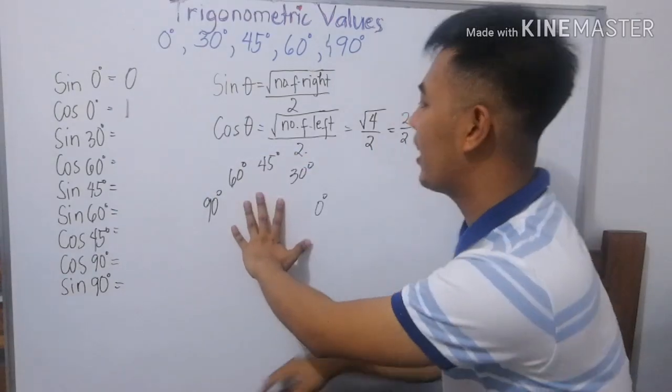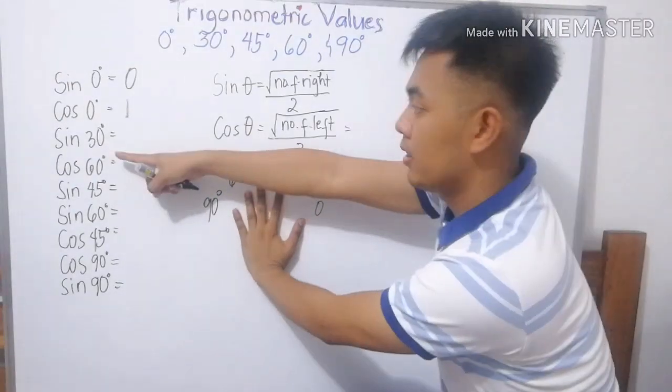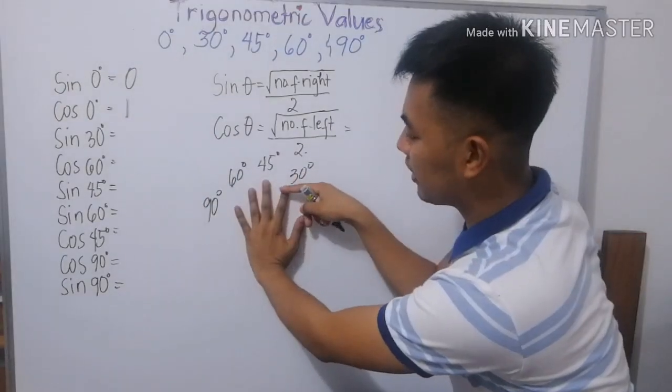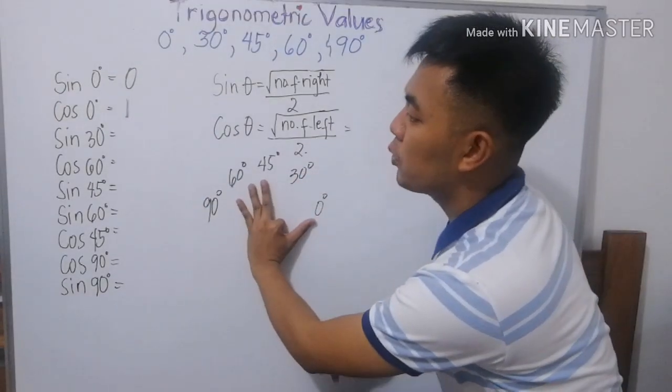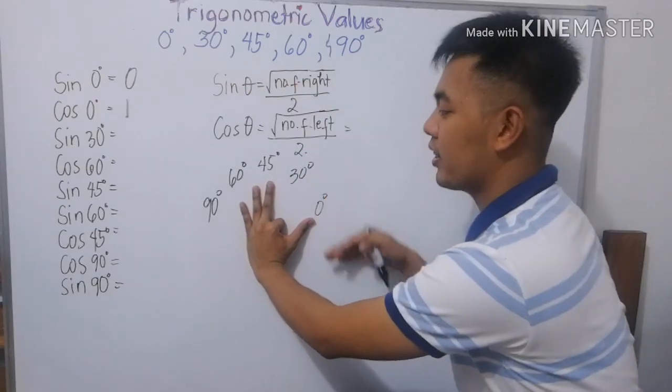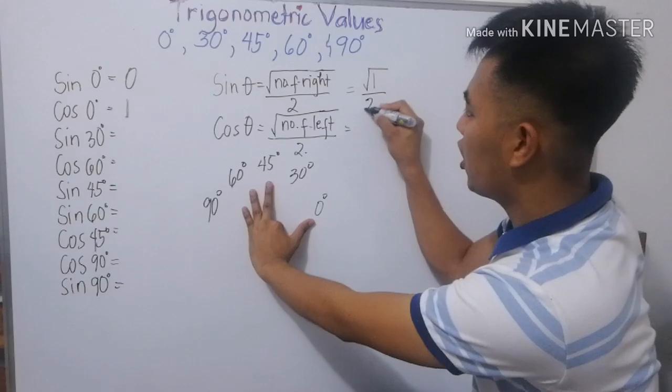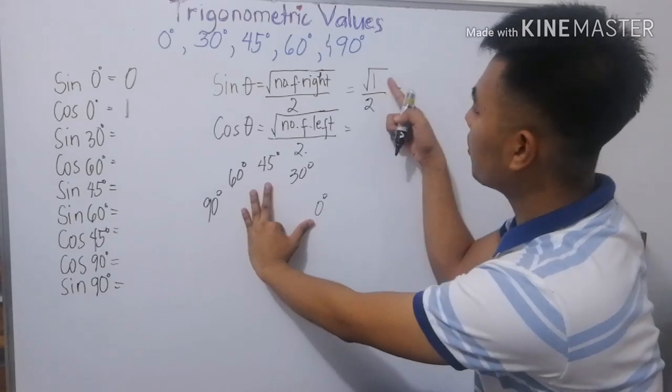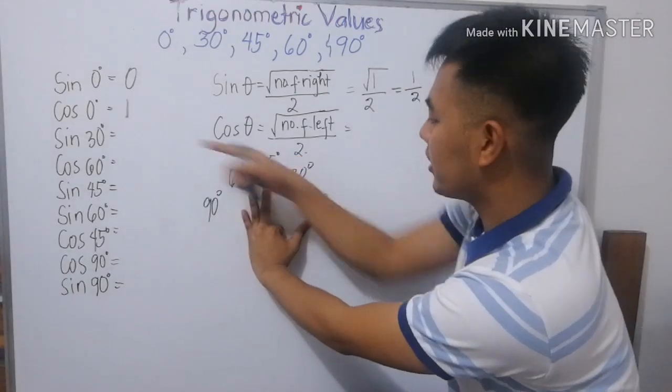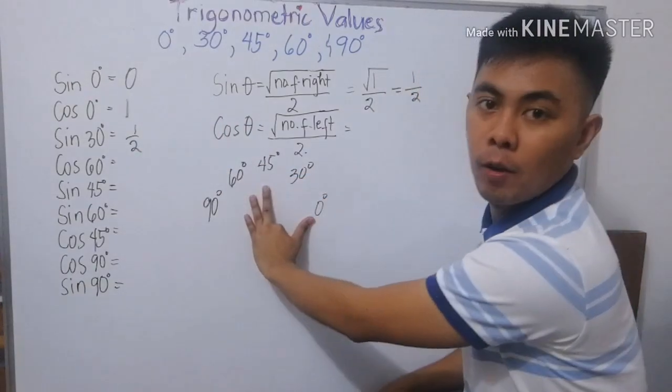Okay. So, yung mas malaking angle, tupiin natin. So, sine 30 degrees. 30 degrees ang ginamit ng angle. So, tupiin natin si 30. Number of fingers to the right. Ilan yung natin sa kanan? 1, square root of 1 over 2. So, yung square root of 1 is 1 over 2. Ibig sabihin, ang sine 30 degrees ay 1 half.